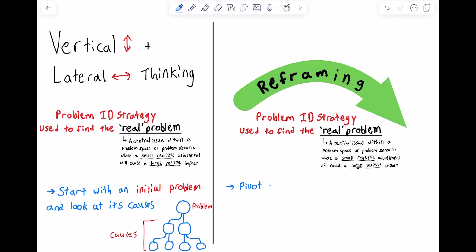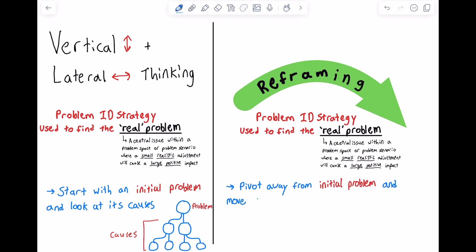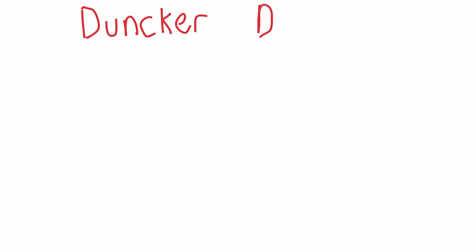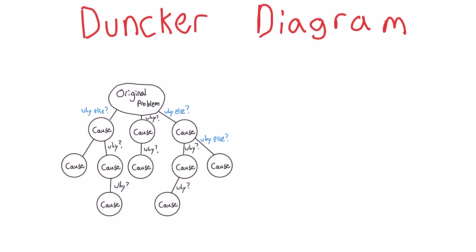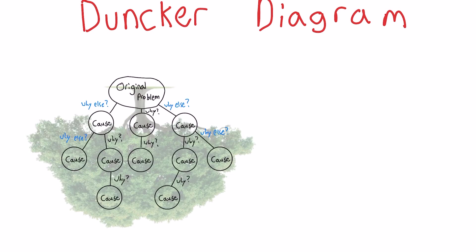Unlike vertical and lateral thinking strategies, reframing can pivot problem solvers away from the initial problem statement entirely and change their focus. Today we'll be looking at a reframing strategy called the Dunker diagram. Remember how we mapped out the causes of a problem using the five whys and why else? That structure for organizing thoughts is known as a tree diagram, used in problem solving, math, computer science, and other fields. A Dunker diagram consists of two trees.